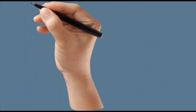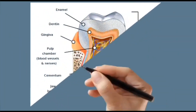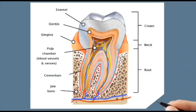This is the diagrammatic representation of the tooth structure, which consists of the crown and root. The crown consists of enamel and dentine, while the root consists of the pulp chamber and the cementum, and the entire tooth is lodged within the bony socket.